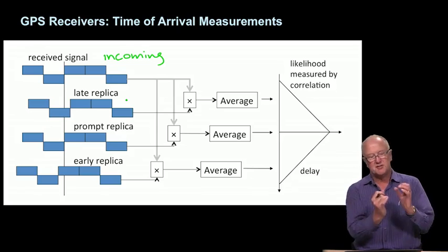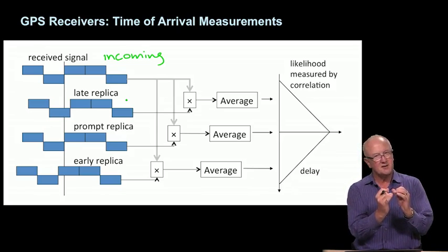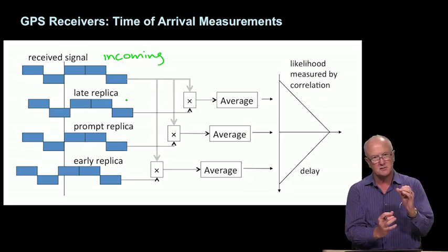The goal is to align the internal replicas with the incoming real signal from the satellite. Once we get those aligned, we have a very good measurement of the arrival time.